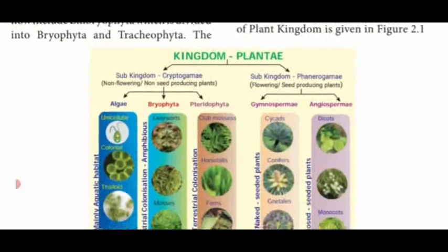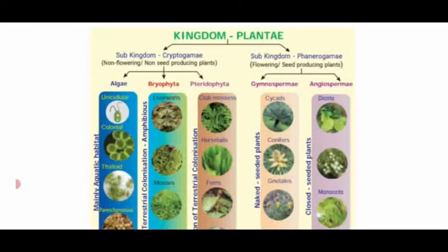The classification with diagram shows kingdom Plantae divided into two sub-kingdoms: Cryptogamae and Phanerogamae. Cryptogamae are otherwise known as non-flowering plants — they do not produce flowers and are non-seed producing. The other sub-kingdom, Phanerogamae, are named as flowering plants and also seed-producing plants. Cryptogamae have no flower, while Phanerogamae produce the reproductive organ known as the flower. Cryptogamae are again divided into three divisions: algae, bryophyta, and pteridophyta. Phanerogamae are divided into gymnosperm and angiosperm.